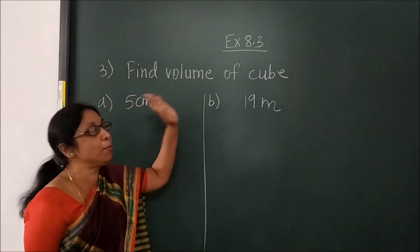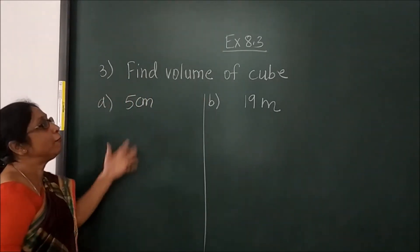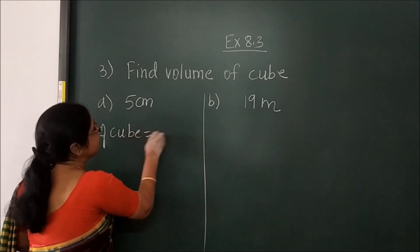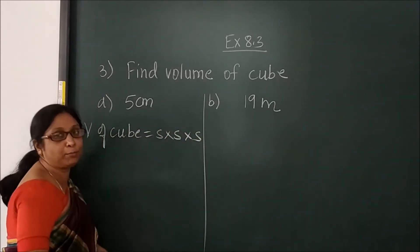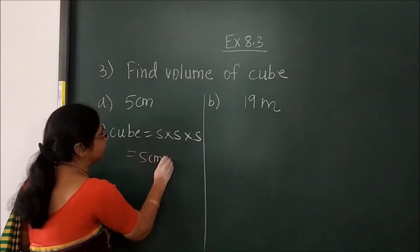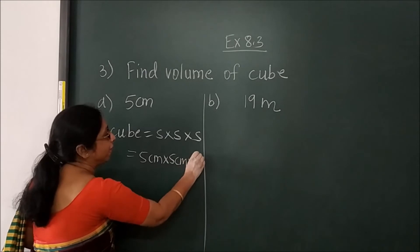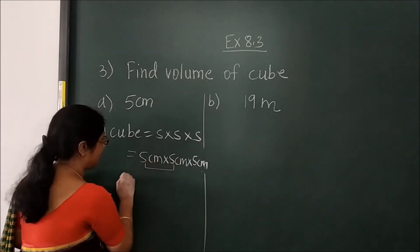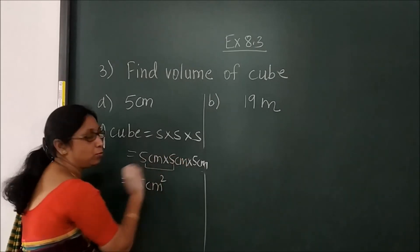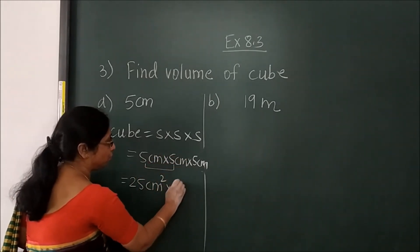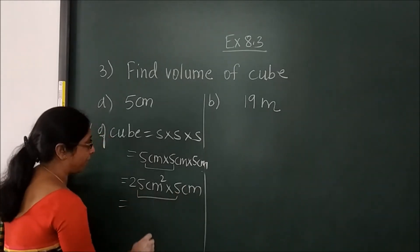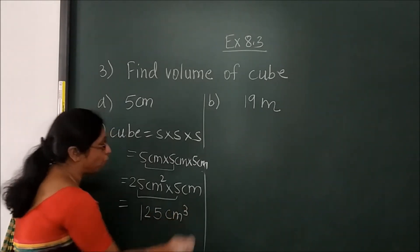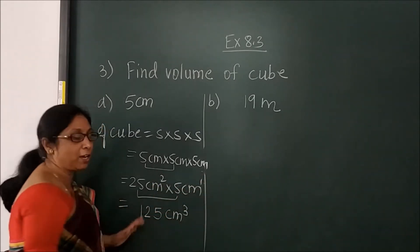Now find the volume of a cube — that is question number 3. For volume of a cube, the formula is different: volume of cube equals side into side into side — 3 times the side. Place the value: 5 centimeter, 5 centimeter, and 5 centimeter. 5 fives are 25 centimeter squared; then 25 fives are 125 centimeter cubed. Why cubed? Because centimeter appears 2 times plus 1 time, total 3.